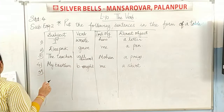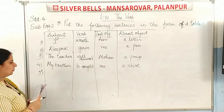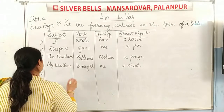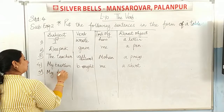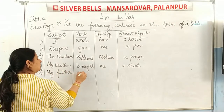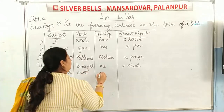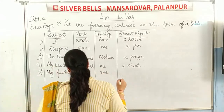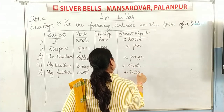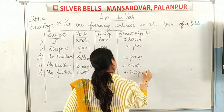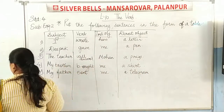Now fifth sentence: 'My father sent me a telegram.' Mere father ne mujhe telegram bheja. So my father is the subject, sent is the verb, me is the indirect object, and a telegram is the direct object.